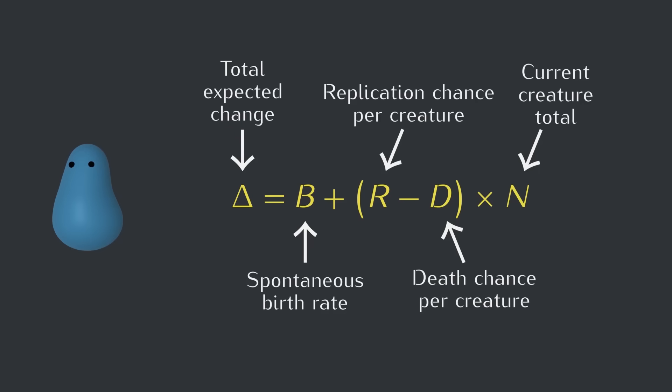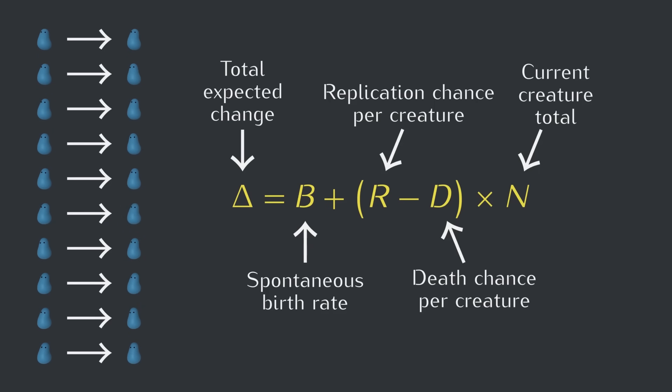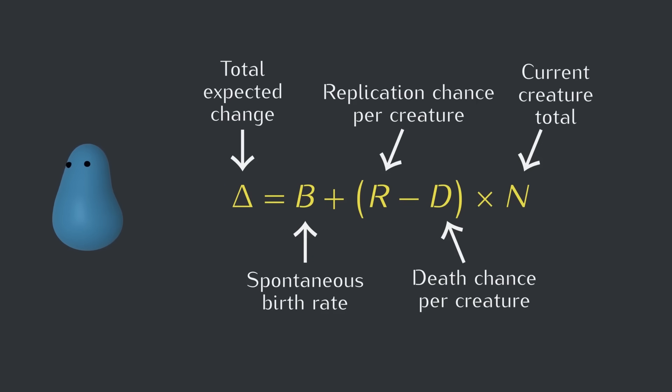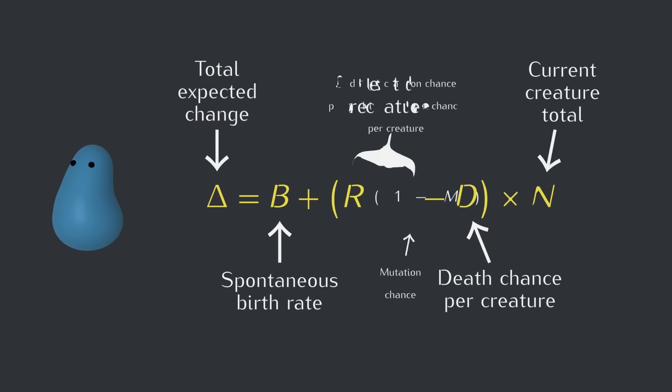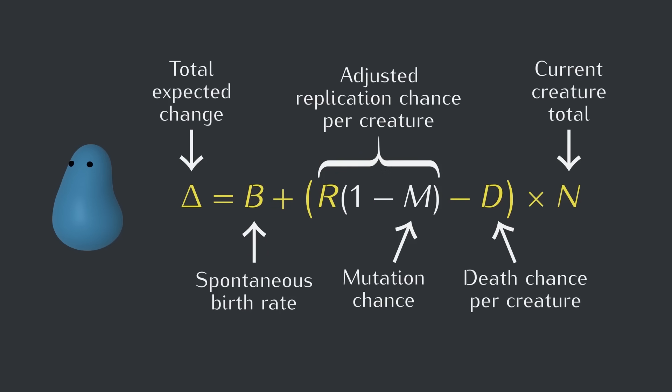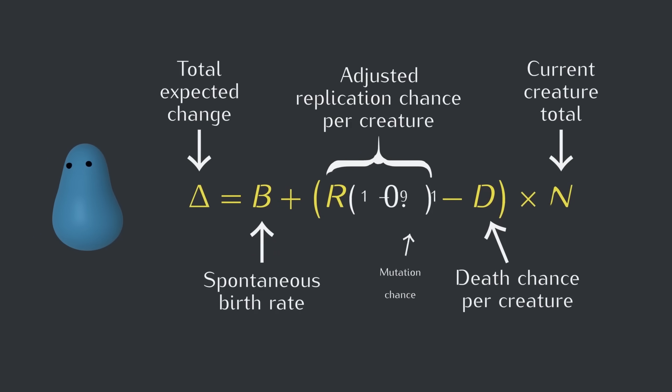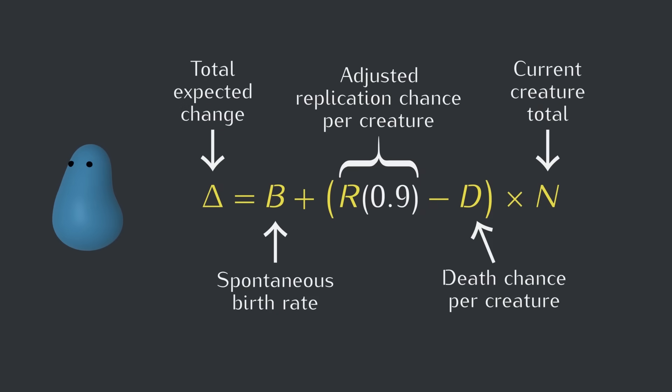To think about this, say 10 blue creatures replicate at a certain time. Without mutations, all 10 of the new creatures will contribute to the number of blue creatures at the next time step, but since blue has a 10% mutation chance, on average we'd expect one of those creatures to actually come out green, so only 9 of the 10 new creatures will be added to blue. We can account for this loss by multiplying R by 1 minus M. With a 10% mutation chance, 90% of blue replications will convert into blue creatures.